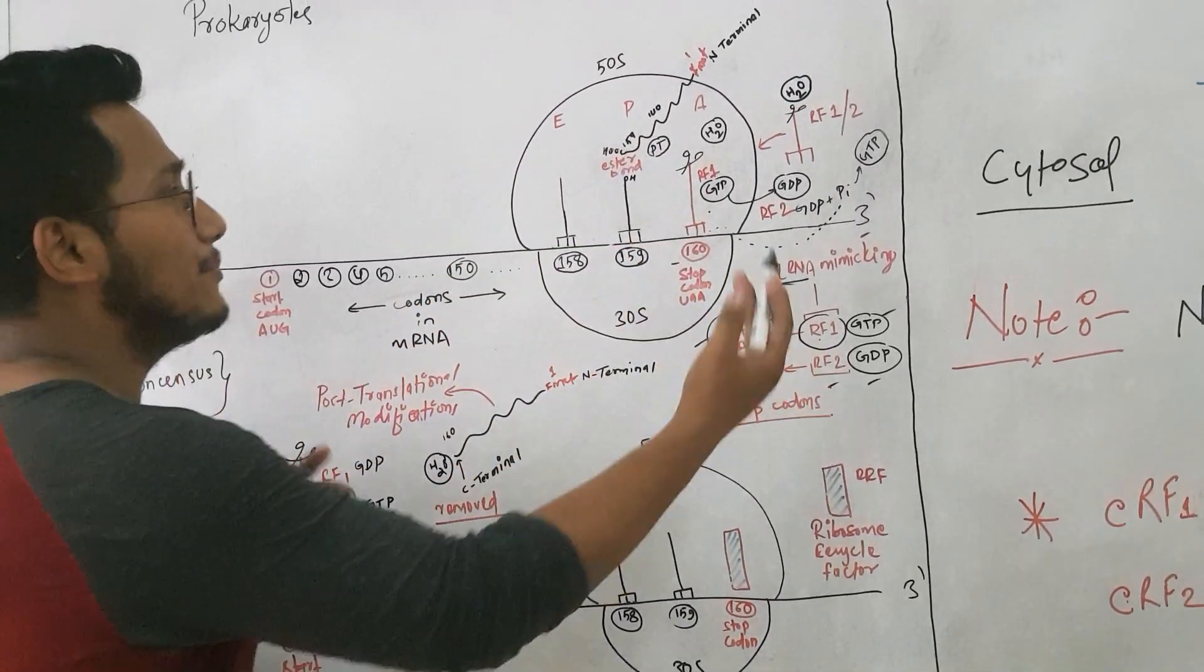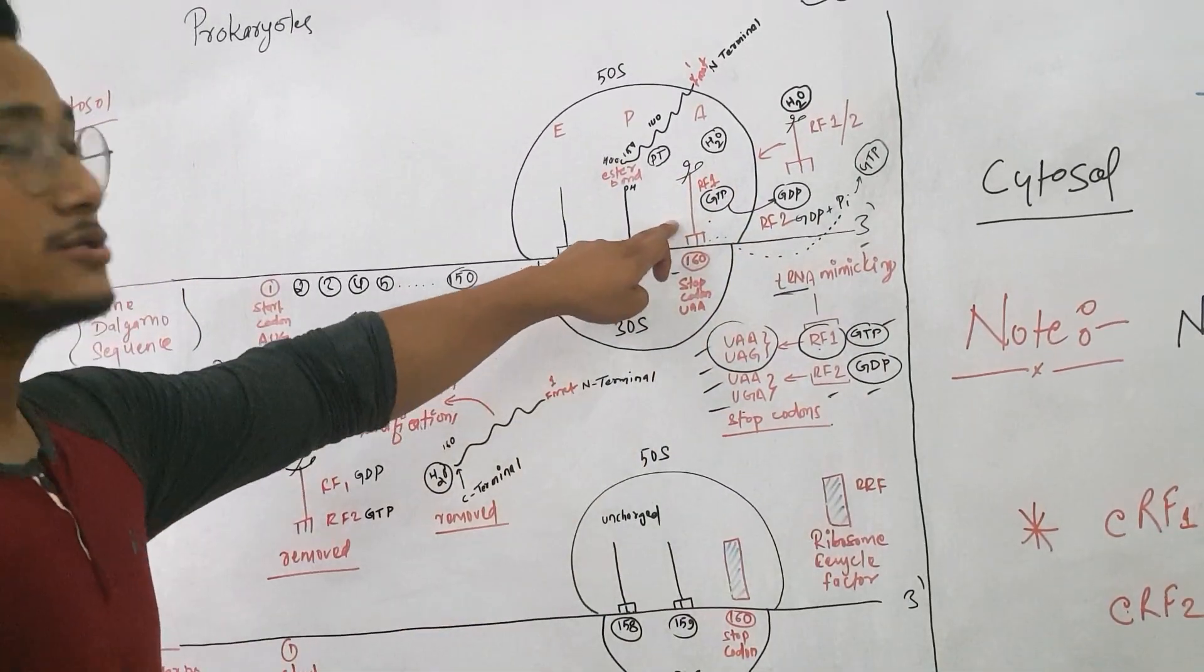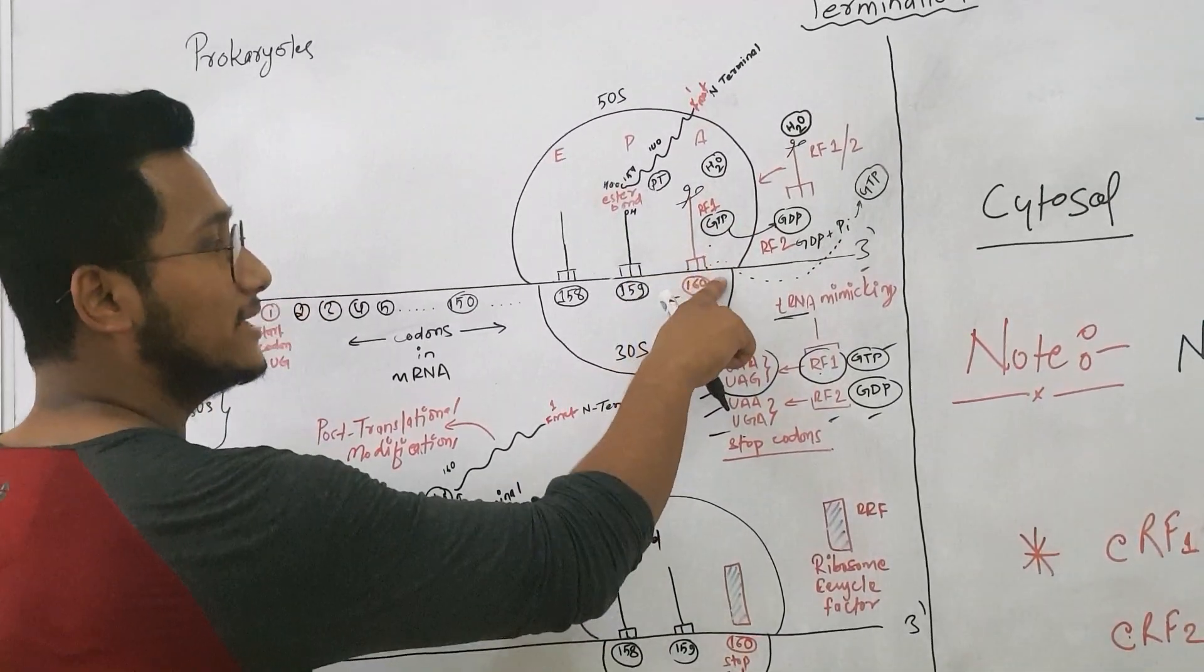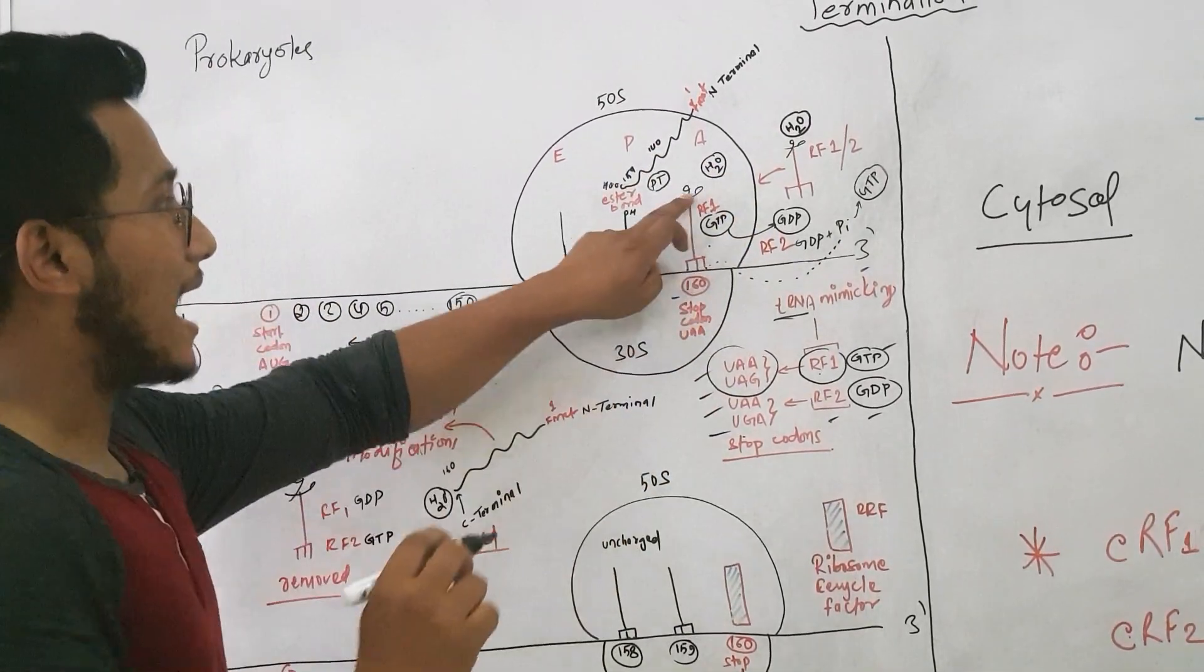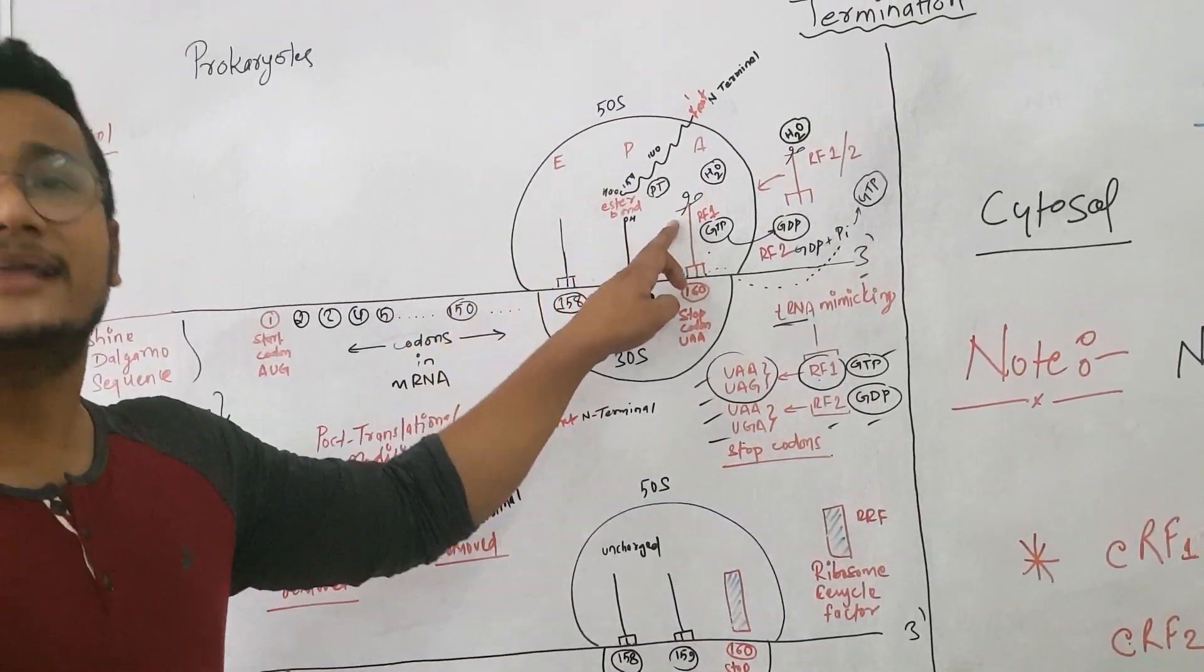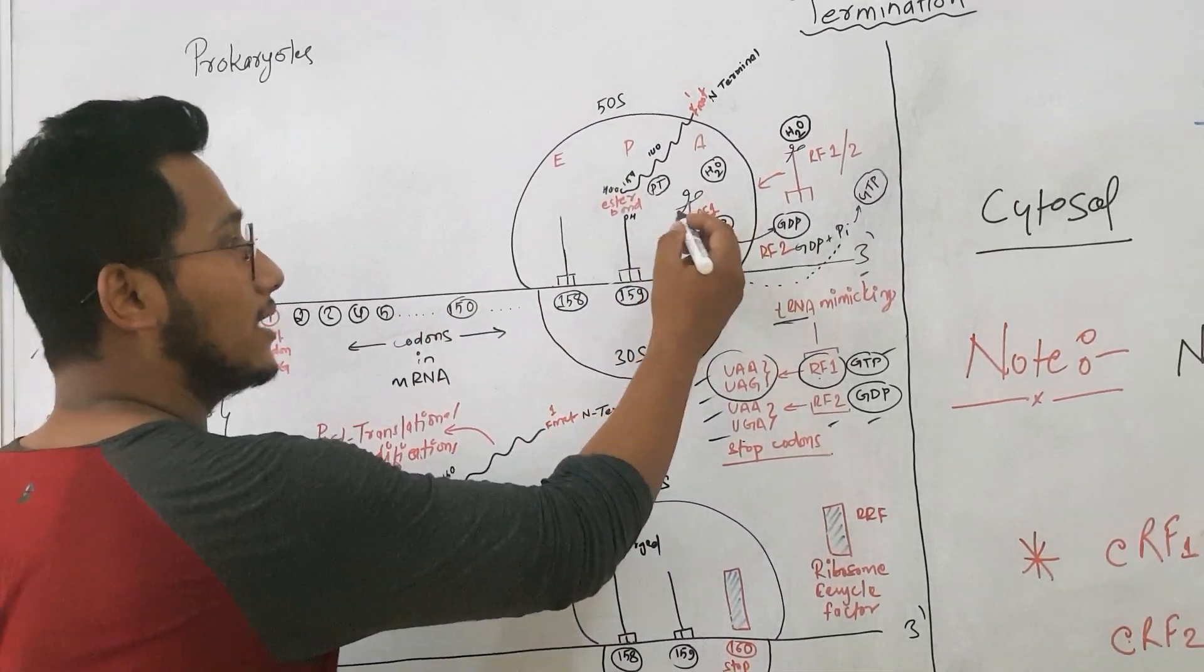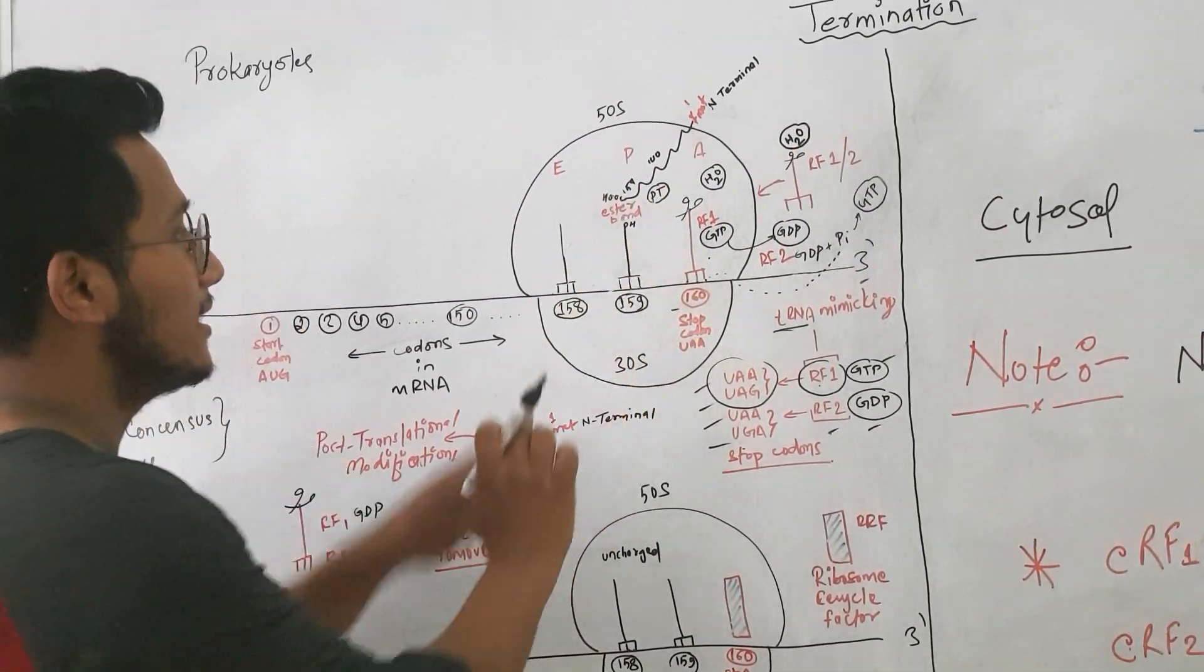For example, let's just say RF1 enters into the A site. When it enters, RF1 has a domain which interacts with the codon in the mRNA, the stop codon, but it also has a domain at the end, around the 3-prime end—it has a peptidase domain. This scissor-like structure you see is a peptidase domain of RF1 which can hydrolyze the ester bond.